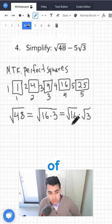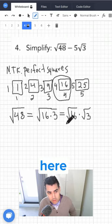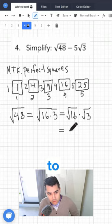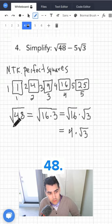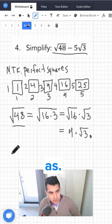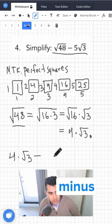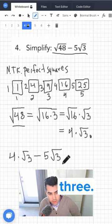So the square root of 16, we know from the perfect square right here that it is equal to 4. So we have 4 times square root of 3. So we could rewrite all of this as 4 times square root of 3 minus 5 times square root of 3.